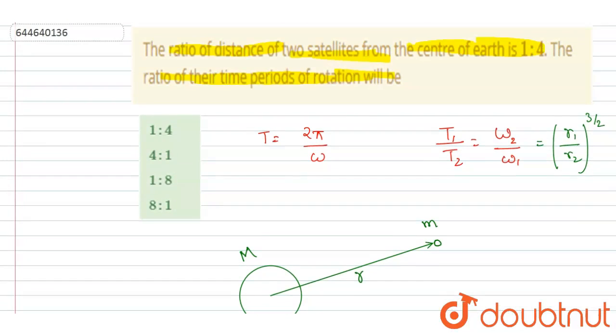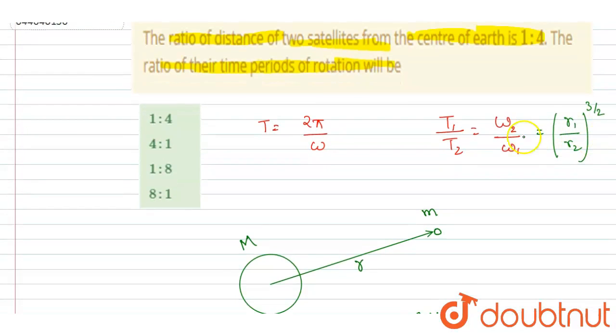Inverse relation. So it will be this. Now you can put the value of R₁ and R₂. R₁ by R₂ is 1 is to 4. Put it here.